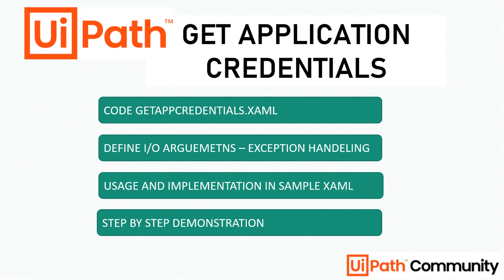That completes the implementation of the Get Application Credential. Quick recap: we coded the get_app_credential.xaml from scratch, defined input and output arguments, implemented exception handling, created an asset in the Orchestrator, and successfully used the XAML to log into the ACME site. That's all for this video — thank you for watching, please subscribe to the channel, and happy automation!